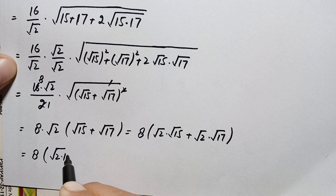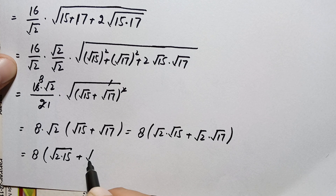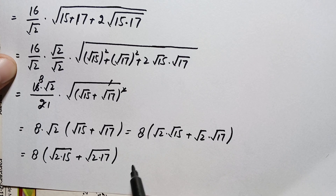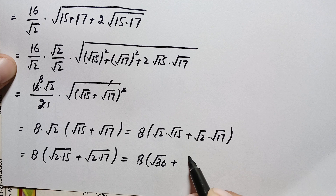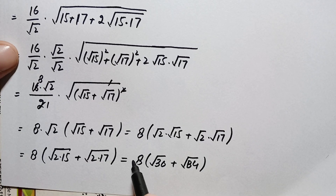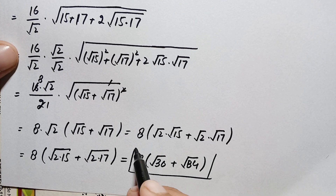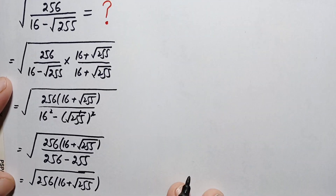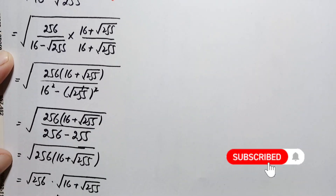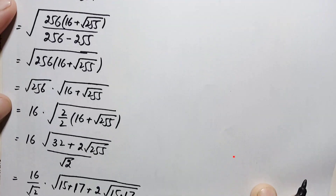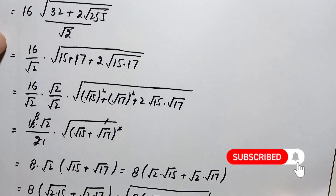Multiplying square root of 2 inside the expression: this becomes 8 times (square root of 2 times 15 plus square root of 2 times 17), which simplifies to 8 times (square root of 30 plus square root of 34). So finally, 8 times (square root of 30 plus square root of 34) is our final answer. Don't forget to subscribe to my YouTube channel for more interesting step-by-step math solutions. Thanks for watching.